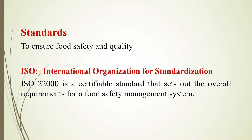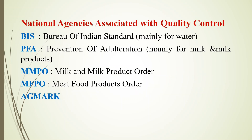National Agencies Associated with Quality Control: First, BIS — Bureau of Indian Standards — mainly used for Water. Next, PFA — Prevention of Food Adulteration — mainly used for Milk and Milk Products. Then MMPO — Milk and Milk Product Order — established in 1992.